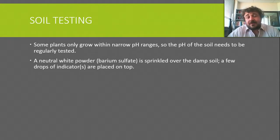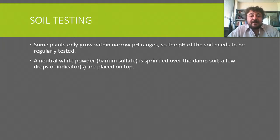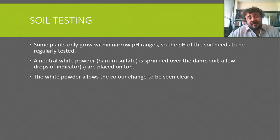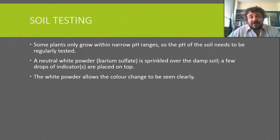There are several ways to do it. The most common way is using a neutral white powder, which is barium sulfate, and this is sprinkled over the damp soil. We then put a few drops of indicator, and it will change colour according to the pH of the soil. Why the white powder? We use the white powder so that we can see the colour change, because if you do it on soil it's too dark — everything looks brown.